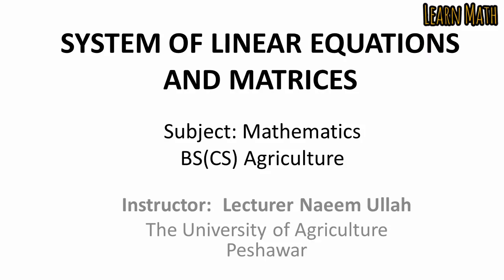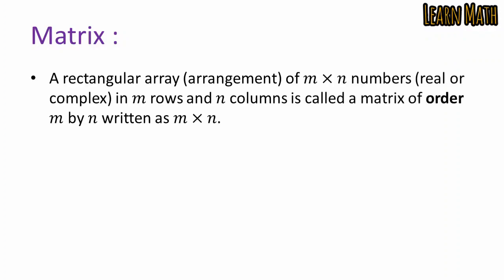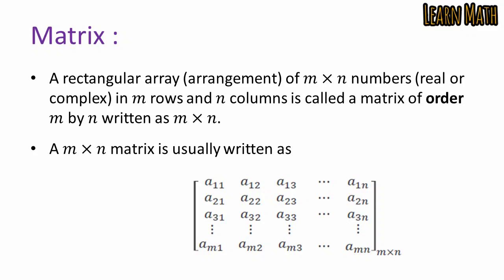In today's lecture we will discuss system of linear equations and matrices. A matrix is a rectangular array — an arrangement of numbers, real or complex, with m rows and n columns, called a matrix of order m by n. The element a(1,1) represents the first row and first column, and a(1,2) represents the first row and second column.